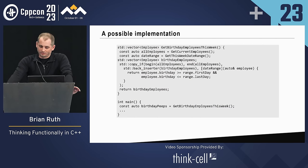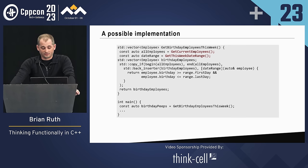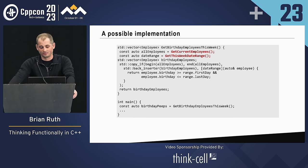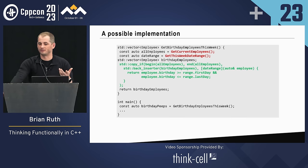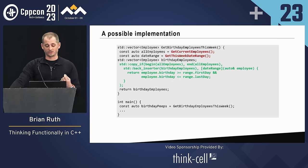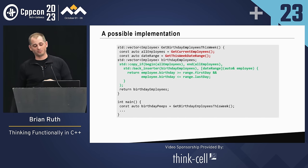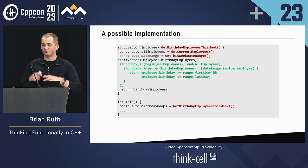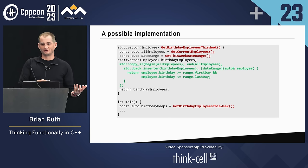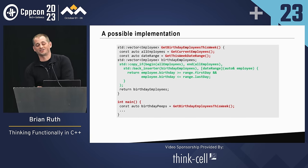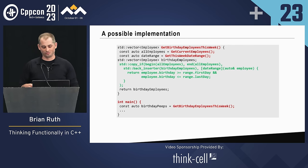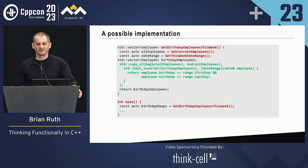How you implement things matters. Here's a possible implementation: we've got get_current_employees and get_this_week_date_range, identified as actions. We also have copy_if to determine which people have birthdays within the date range — that's a calculation. But because the get_birthday_employees_this_week function calls actions, that means it itself is an action. Actions have this tendency to spread — if you have a function that calls something that's an action, it keeps trickling down until the highest level, which also makes main an action.